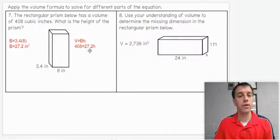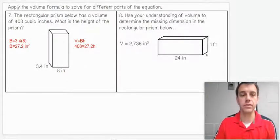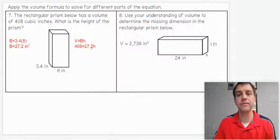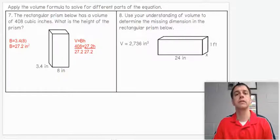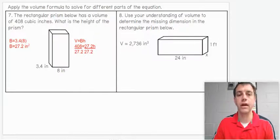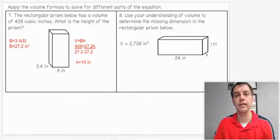We were given 408 cubic inches as our volume. We just found 27.2 as our base area, and we're looking for the height. We have a one-step equation. We simply divide by 27.2 to get H by itself. So our height is 15 inches. And if you don't believe me, you can always multiply these two together and then multiply by 15 to make sure you get 408.